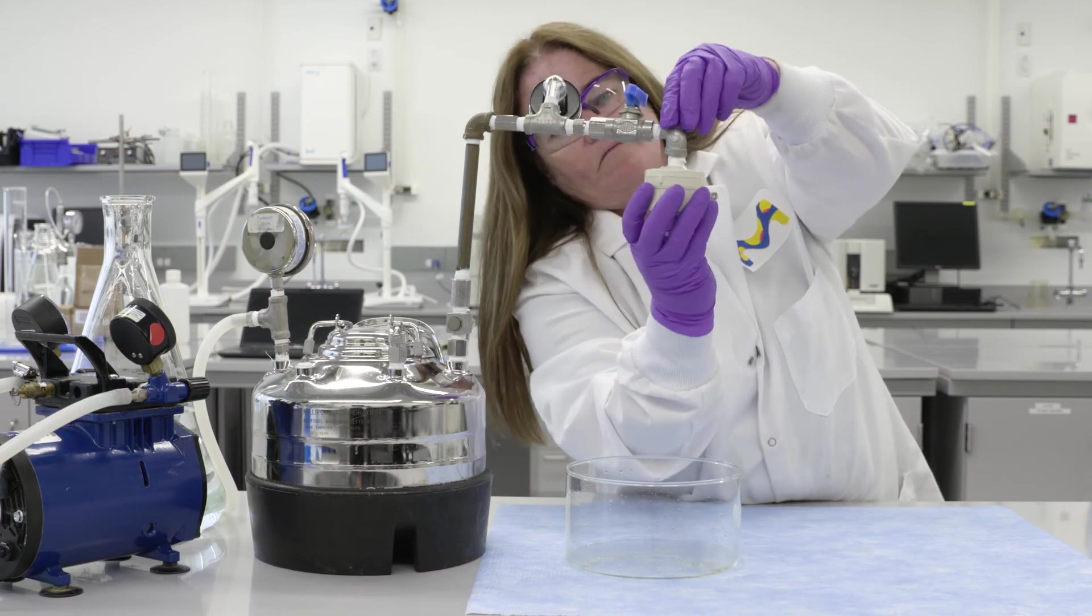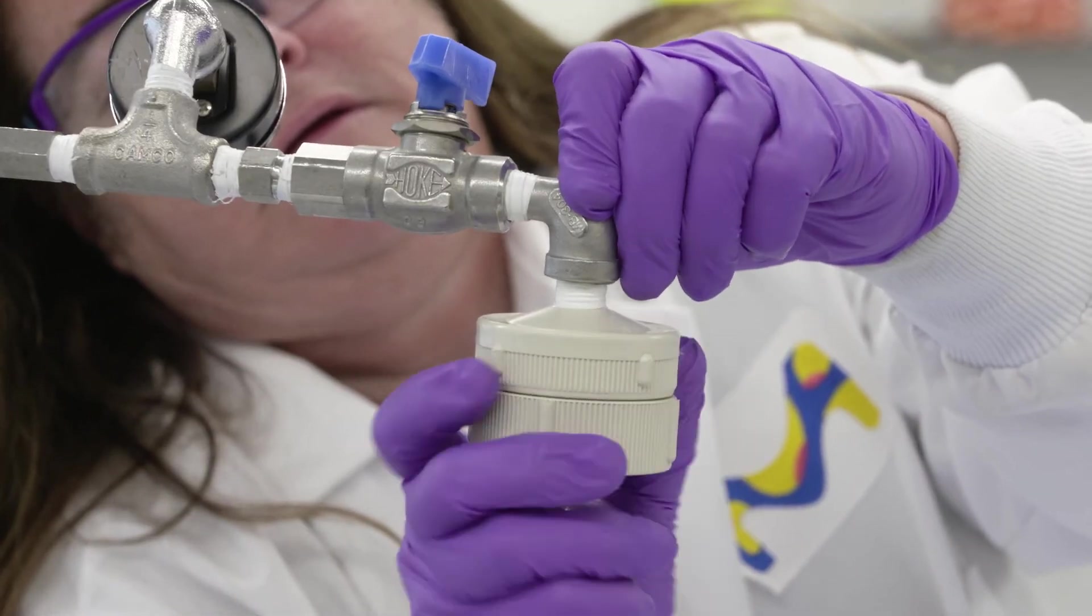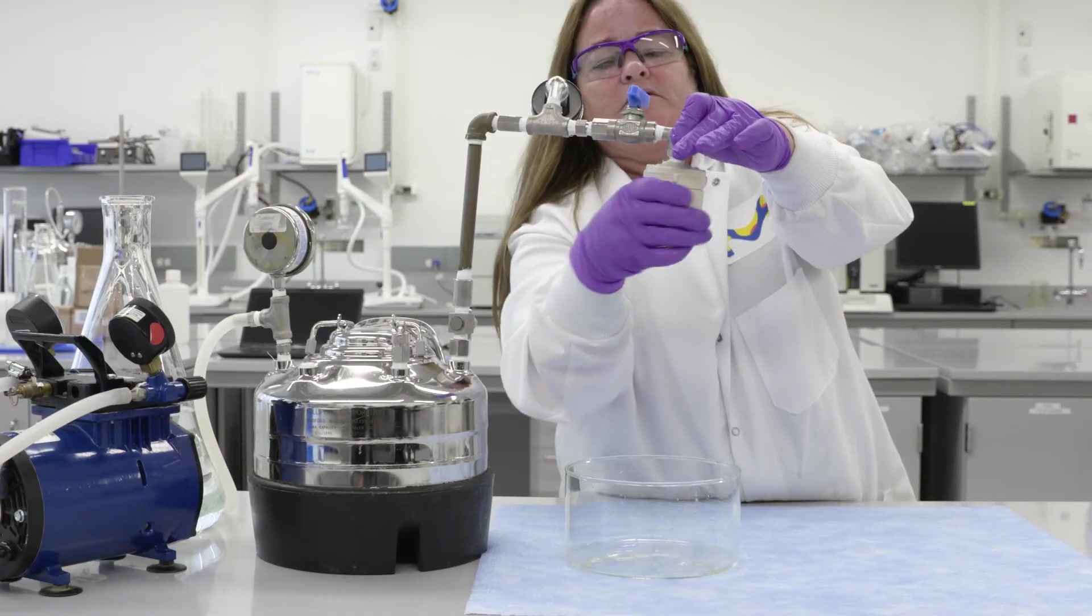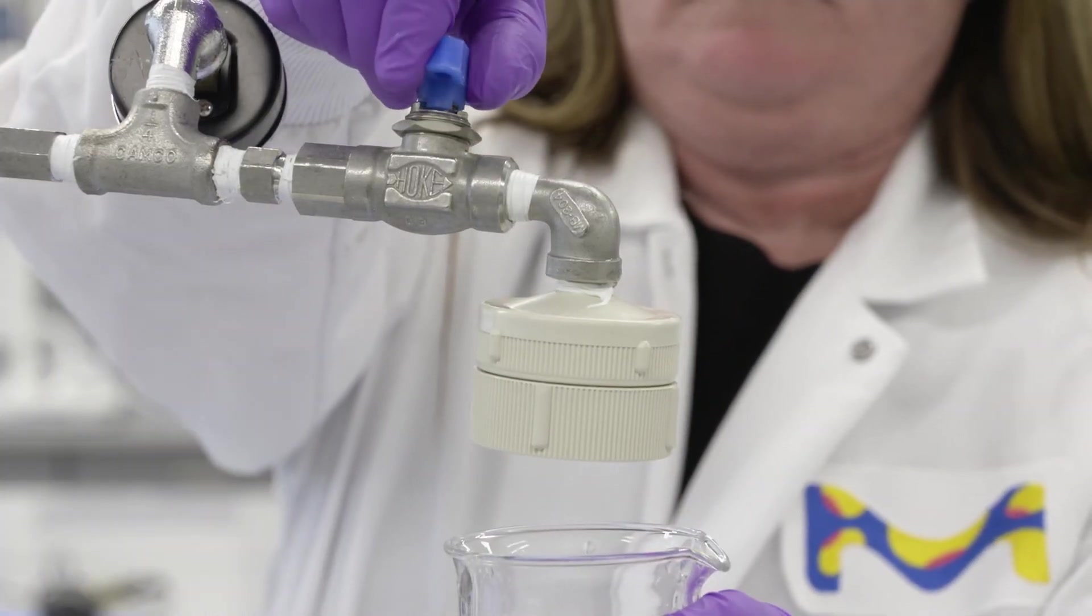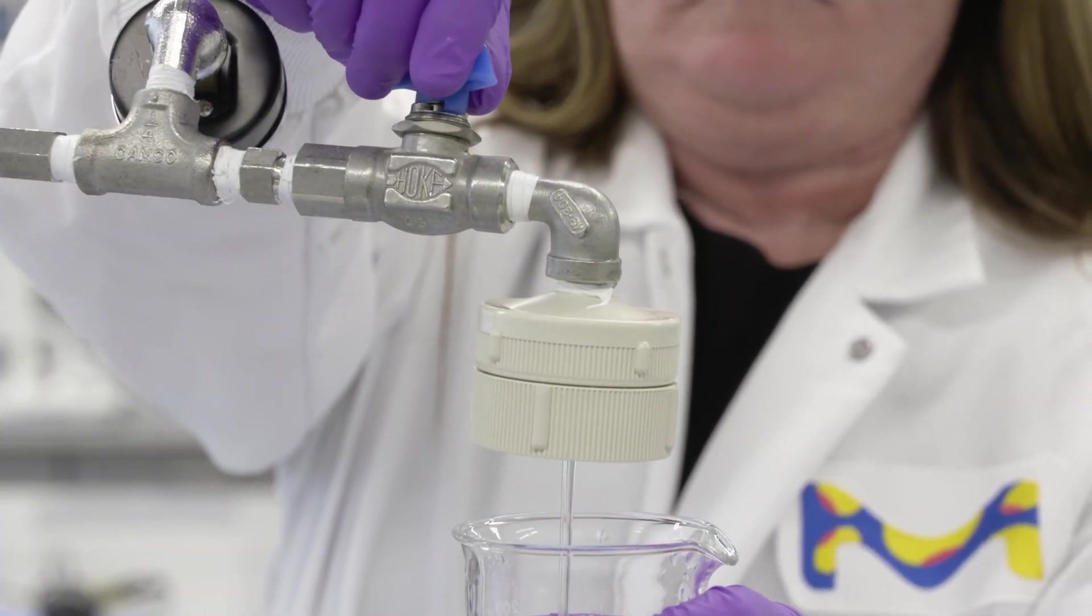Attach Swinex 47 to the outlet of the dispensing vessel and center over collection container, or you can attach a tube to the outlet. Open the valve to initiate flow and close the valve to stop flow.